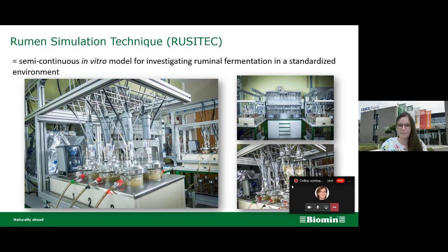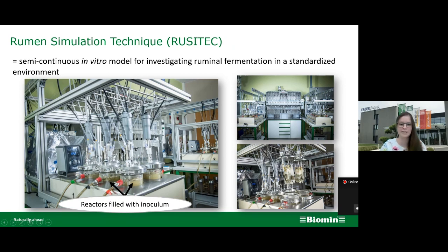You can see here how the system looks. We have 12 reactors that are filled with an inoculum, which is basically the rumen fluid of a cow. The inoculum is the same in every reactor, and the reactors represent our fermentation chambers. They are placed in a water bath to keep them under constant conditions and constant temperature — 39 degrees Celsius.